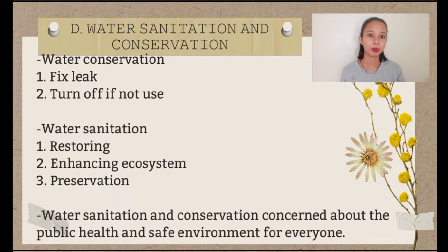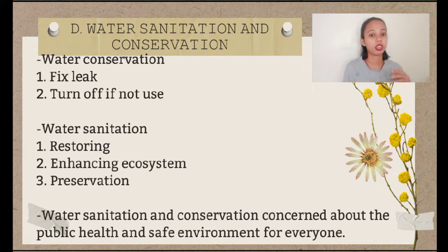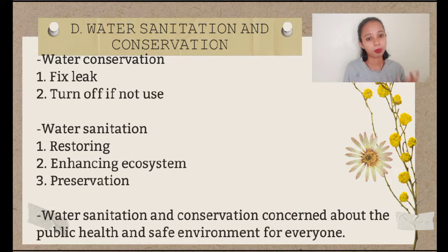For example, water sanitation. First, restoring the water basin or riverbank. Once the riverbank is rehabilitated, we can use the entire river for our benefits like business purposes, for agriculture, and for everyday lifestyle.